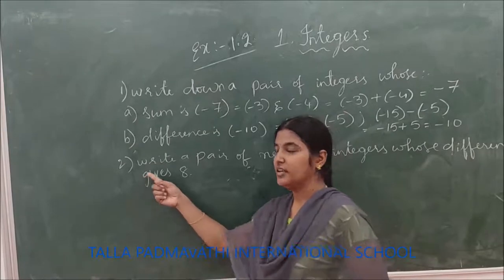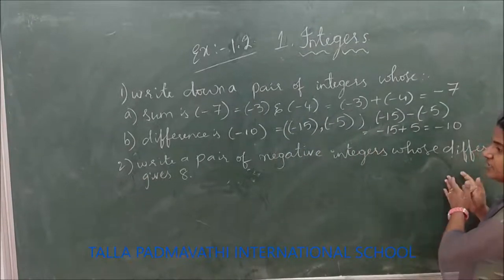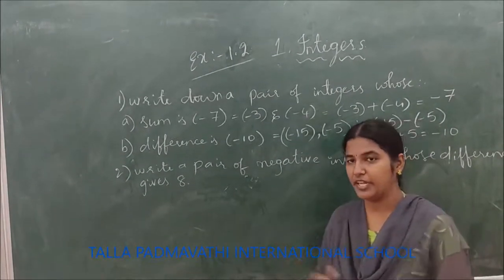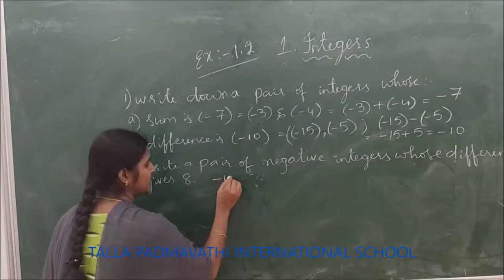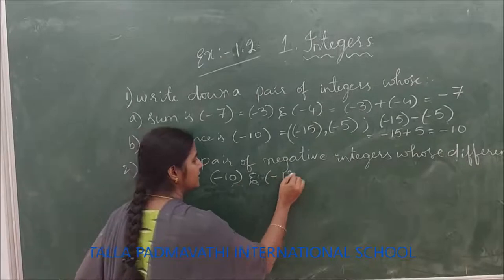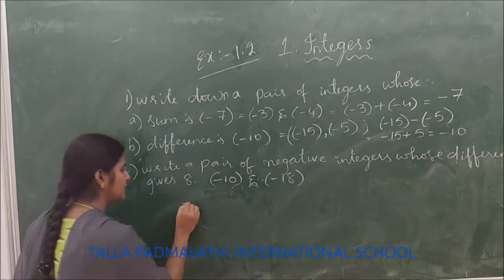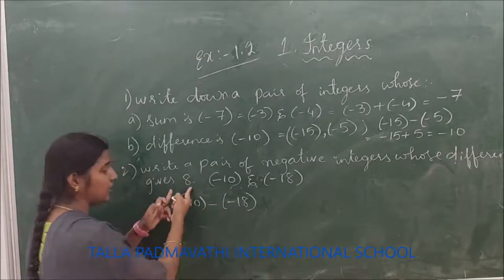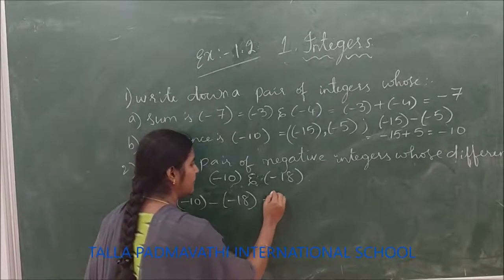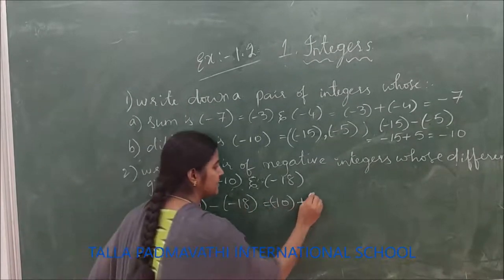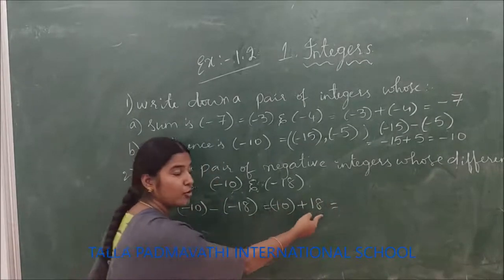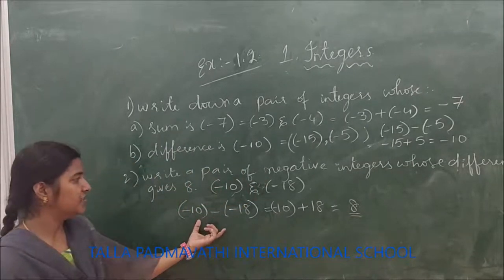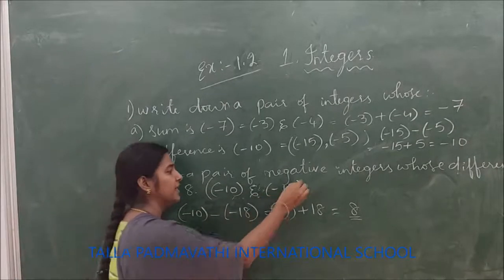The second question is: write a pair of negative integers whose difference is 8. You need to take two negative integers such that their difference should be 8. Let us take minus 10 and minus 18. Minus 10 minus minus 18 is minus 10 plus 18. Negative and positive integers — the answer is 8. So the pair of integers are minus 10 and minus 18.